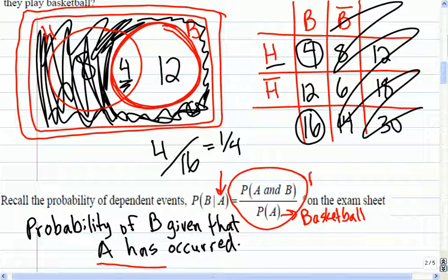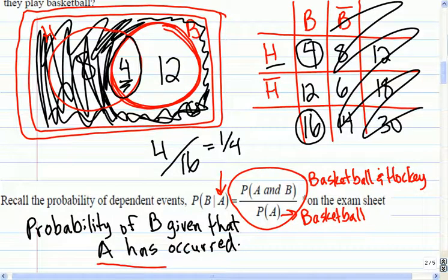So that's this part of the Venn diagram here, the overlap, divided by the whole sample space. Again, it is provided, so don't sweat it. You're not going to have to memorize it, but that should give you a little insight as to where it comes from.